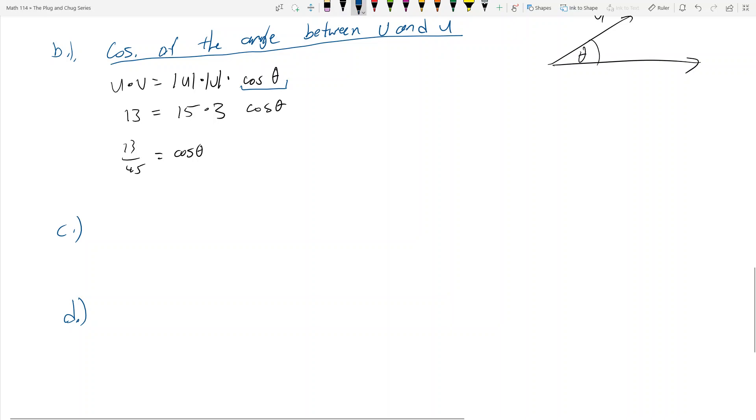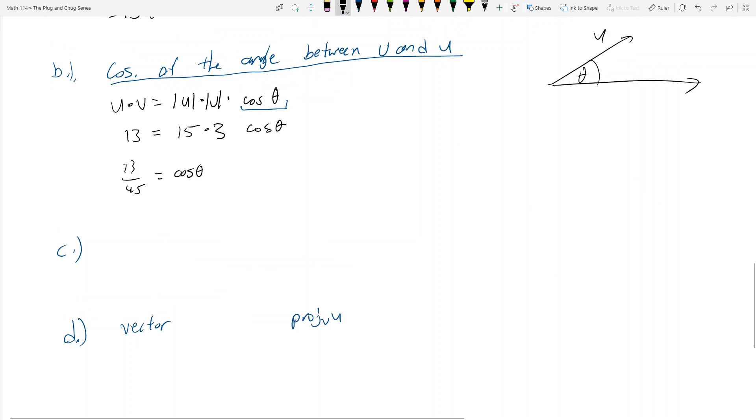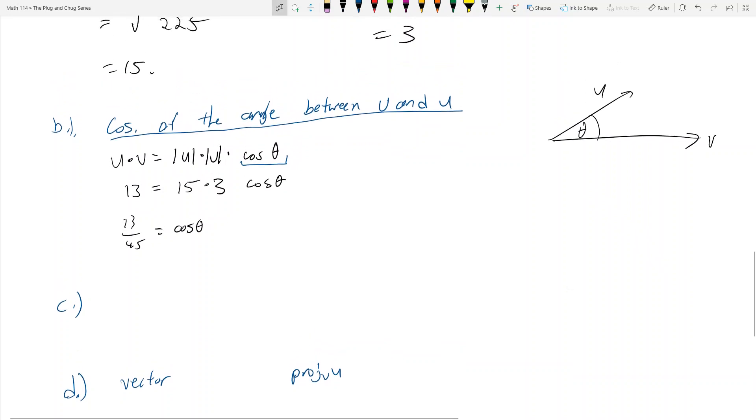So what is D? D asks you to find the projection, the vector projection. And it says proj v u. So it's the vector proj v u. And what does that mean? It means the following. It means that, see this picture up here, where I have u, and let's say this other vector is v, right? The projection of proj v u is the projection of u onto v. So what happens is u gets sent down to v perpendicularly. And then this vector right here is going to be the projection of u onto v. So that's what proj u v is.